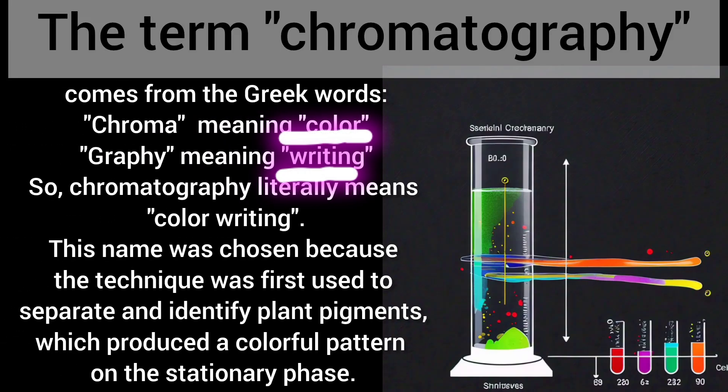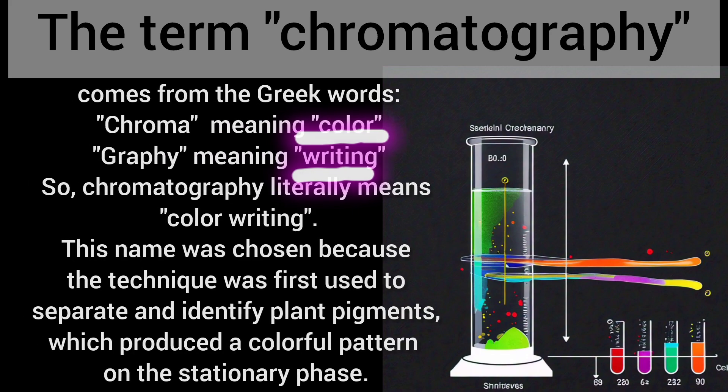The term chromatography comes from the Greek words chroma, meaning color, and graphy, meaning writing. So chromatography literally means color writing. This name was chosen because the technique was first used to separate and identify plant pigments, which produced a colorful pattern on the stationary phase.